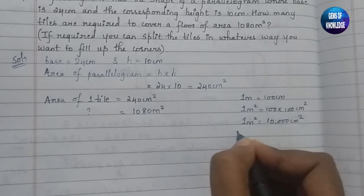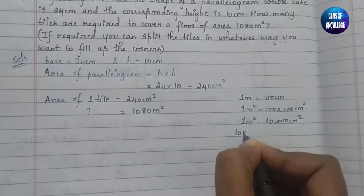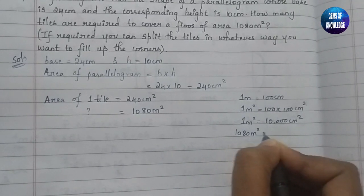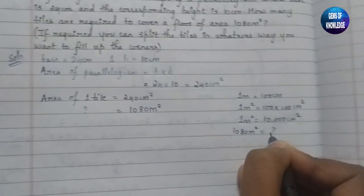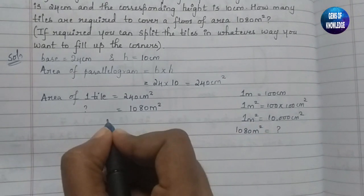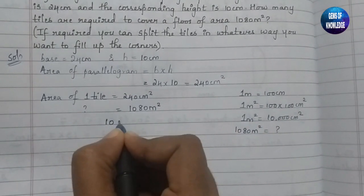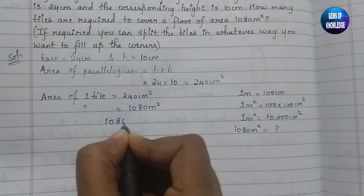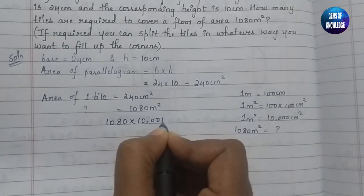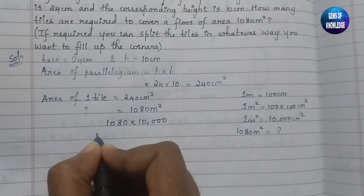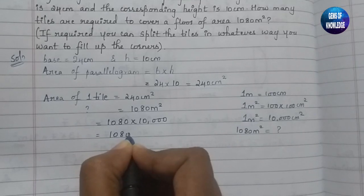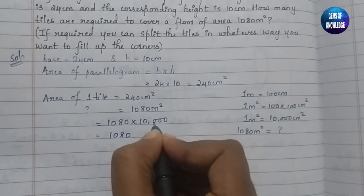Similarly, 1080 metre square equals 1080 into 10,000 cm square.